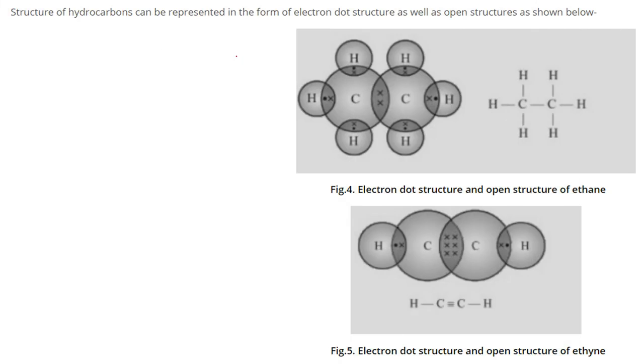The structure of hydrocarbons can be represented in the form of electron dot structure as well as open structure. This is an example of electron dot structure, whereas these are the open structures. Both are signifying the same thing.